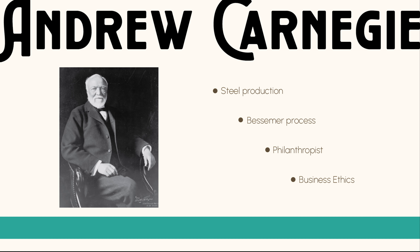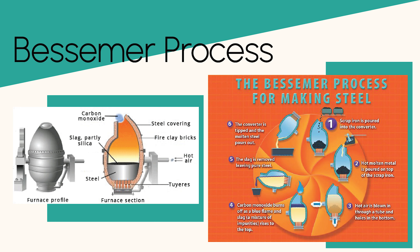Andrew Carnegie was born in 1835 in Scotland and migrated to the United States in 1848. He began his career as a telegraph messenger and worked his way up to become one of the wealthiest men in America. Carnegie was known for his innovative approach to steel production, which transformed the nation's infrastructure. His contributions to the Reconstruction era can be seen in his development of the Bessemer process, which allowed for the mass production of steel, enabling the creation of large-scale infrastructure projects such as railroads and skyscrapers.